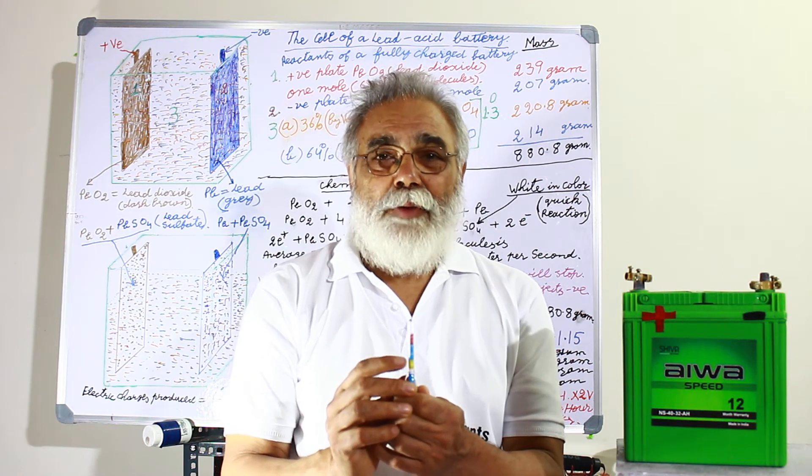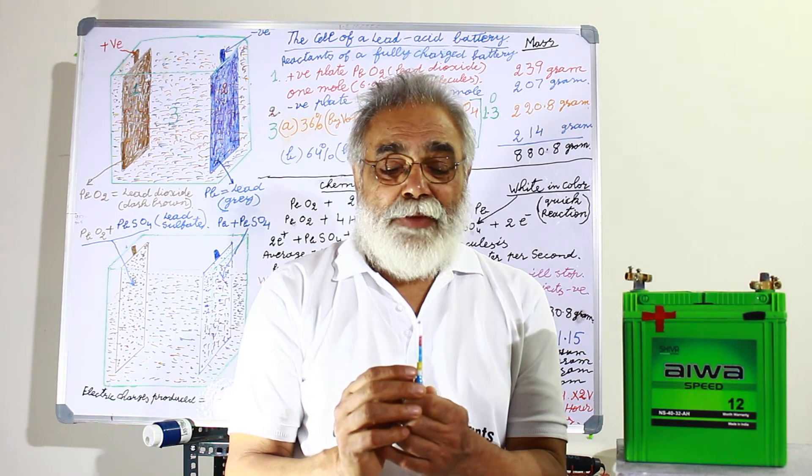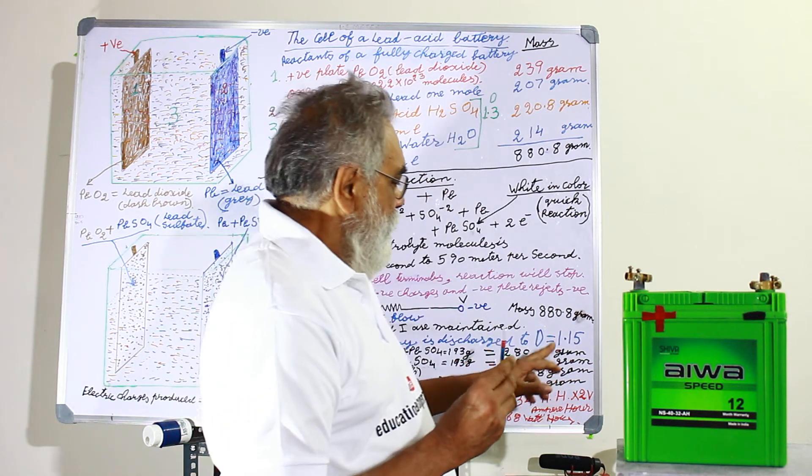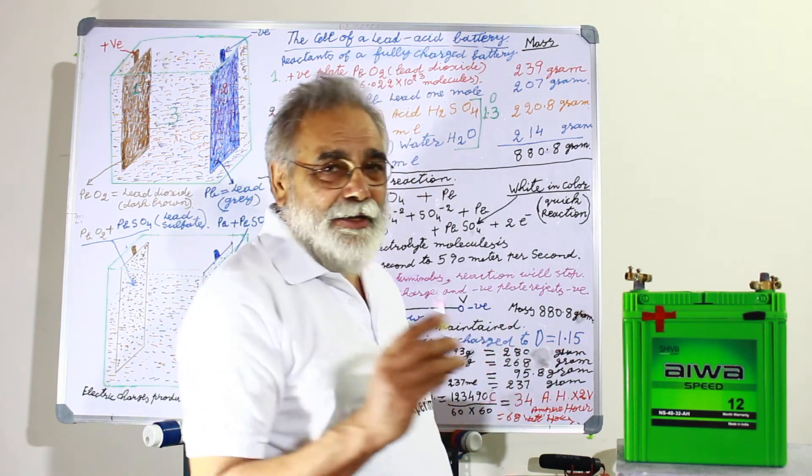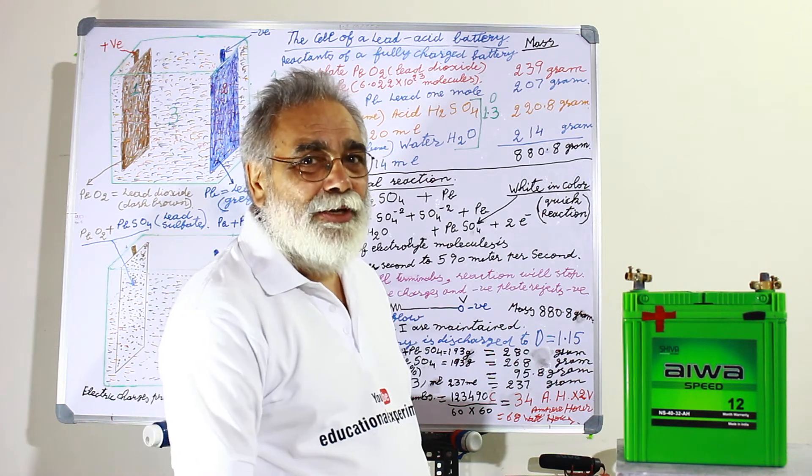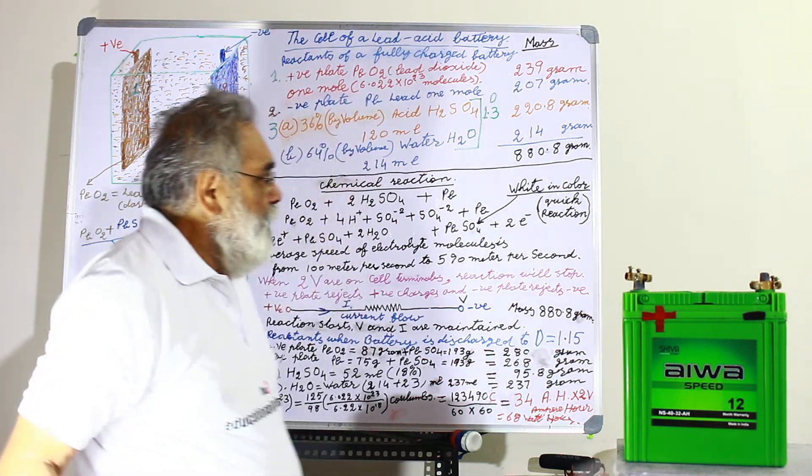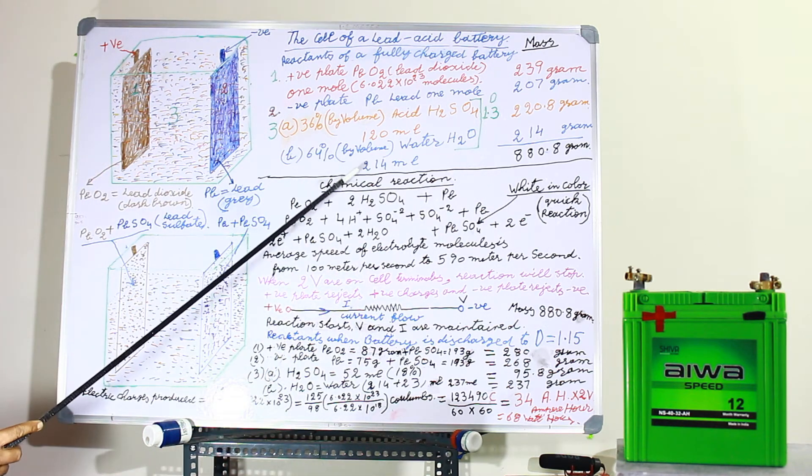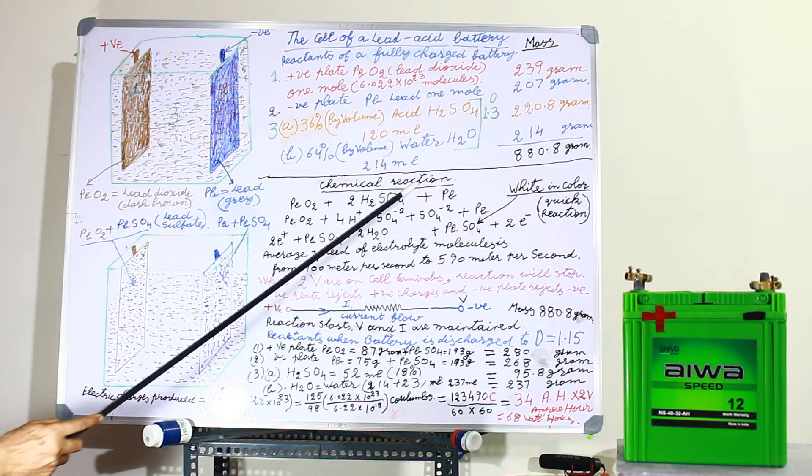Below the yellow is 1.3, and below the red is 1.15. And the red is fully discharged, means from that limit. So here it is 1.3. Now here comes what happens in the chemical reaction.